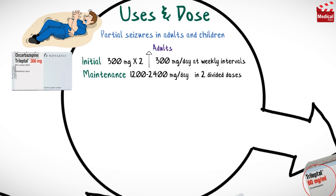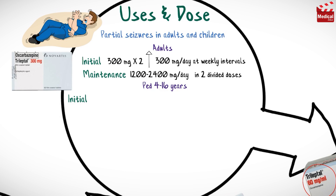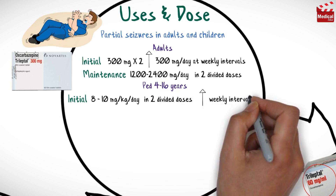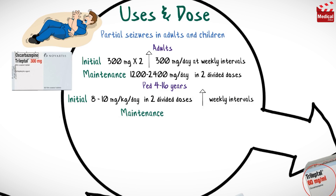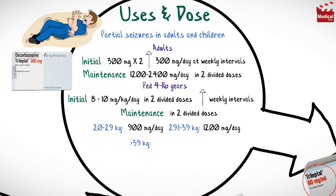For pediatrics from 4 to 16 years, the usual initial dose is 8 to 10 mg per kg per day in 2 divided doses, increasing at weekly intervals as needed. The usual maintenance dosage in 2 divided doses is: 900 mg per day for 20 to 29 kg, 1,200 mg per day for 29.1 to 39 kg, and 1,800 mg per day for more than 39 kg.